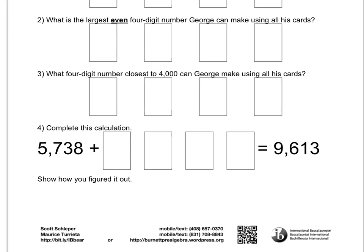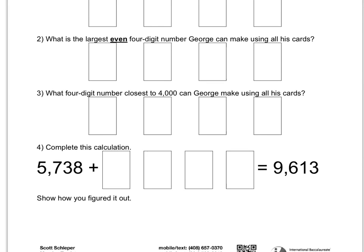For question three: what four-digit number closest to 4,000 can George make using all his cards? Your number has to be as close as you can get it to 4,000 using all four cards. Question five says: 5,738 plus some unknown amount equals 9,613 — reuse those cards from above to fill in the values so the answer equals 9,613, and show how you figured it out. If you have any questions, feel free to contact Mr. Supper and myself. Thank you, good night, good luck, and go Bears!